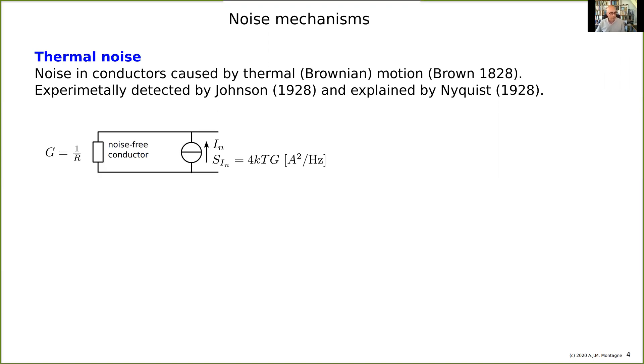Here is a model that is commonly used. We model a noisy conductor as a noise-free conductor and a noise source. In this case we have selected a current source in parallel with a conductance, the conductance of the conductor, and then the spectral density of this current source in amps squared per hertz is 4KTG, where G is the conductance of the conductor.